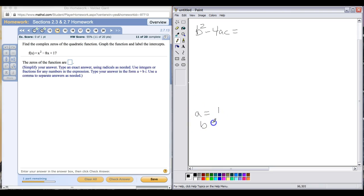Our A is 1, B is negative 8, and C is 17. When we plug this in, we have negative 8 squared minus 4 times 1 times 17. We have 64 minus 68, which gives us negative 4. This tells us that we're going to have a complex conjugate solution here.